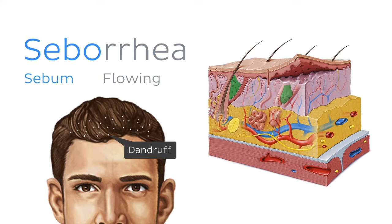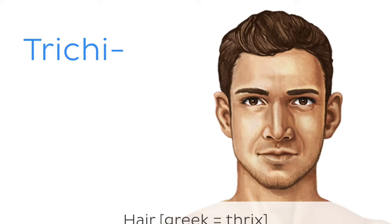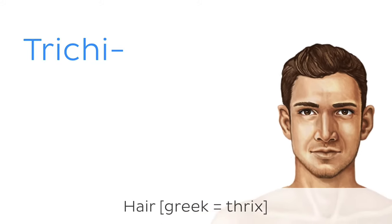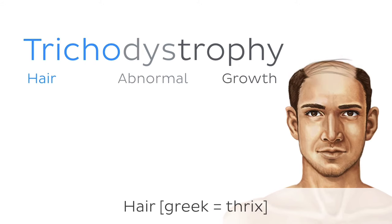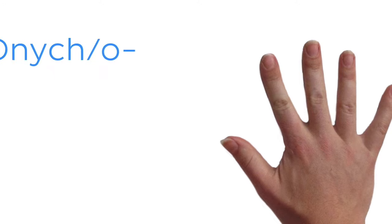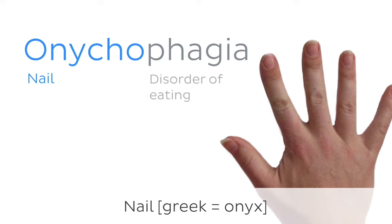The topic of dandruff brings us to the root tricho or trichy, which refers to hair. For example, trichodystrophy is the condition of having malnourished hair, often resulting in hair loss. Finally, the last root word is onyc or onycho, from the Greek onyx meaning nail. Did you know that onychophagia is the clinical term for biting your nails?